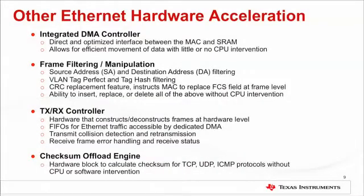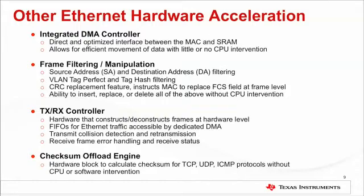First, the integrated DMA controller. This dedicated DMA controller is used to optimize data transfers between the MAC and SRAM, allowing for movement of data for post-processing with minimal CPU intervention. The Ethernet controller supports frame filtering and manipulation, so network traffic can be controlled using source and destination addresses without CPU intervention. The integrated transmit and receive controller consists of a FIFO which buffers and regulates frames between the MAC and system memory. This includes transmit collision detection with retransmission capability and receive frame error handling. And lastly, there is a new hardware checksum engine which performs calculations and insertion of checksum values for TCP, UDP, and ICMP protocols without CPU or software intervention.